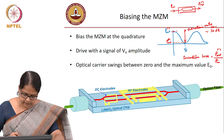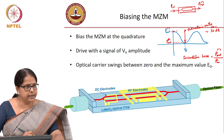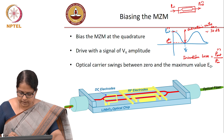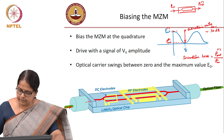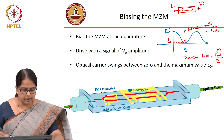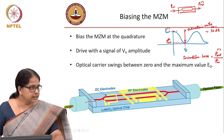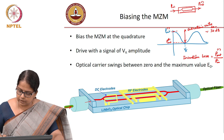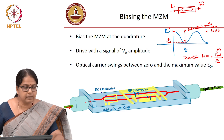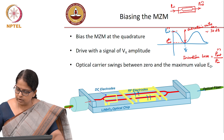This is how a Mach-Zehnder modulator chip would look like. This is your input fiber, which is coupled into the waveguide here. The one shown in red is the waveguide. There is a splitter and then there is a combiner. You also see the electrodes — these are DC electrodes which can help you to adjust your bias, and these are your RF electrodes. You will have some electric field set up between each waveguide arm, and this is your output fiber.